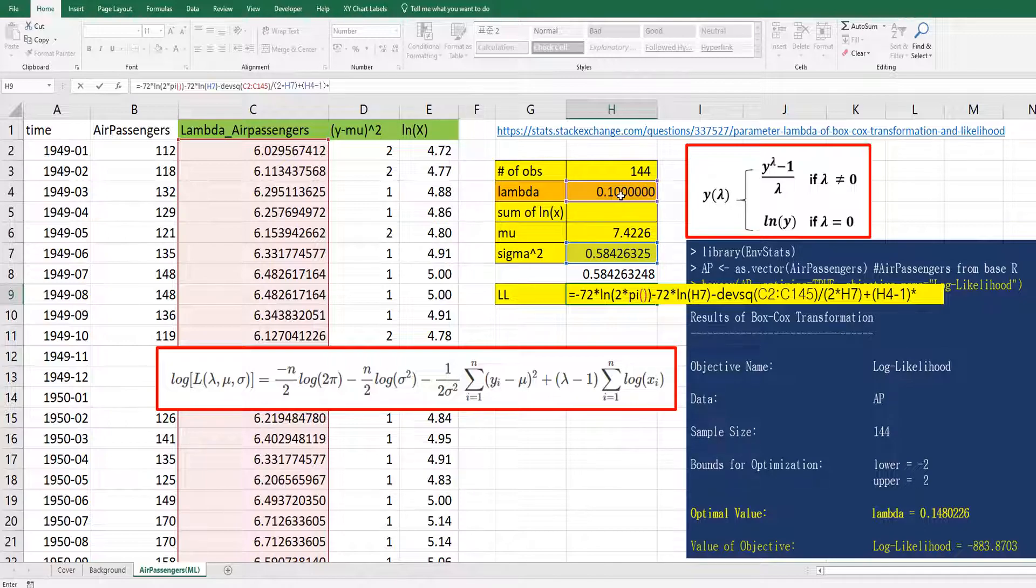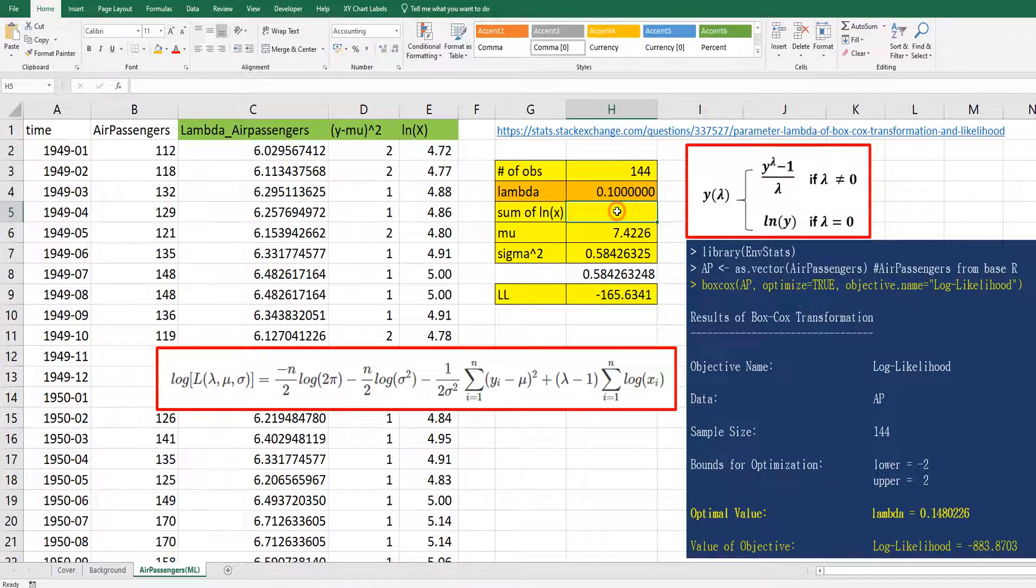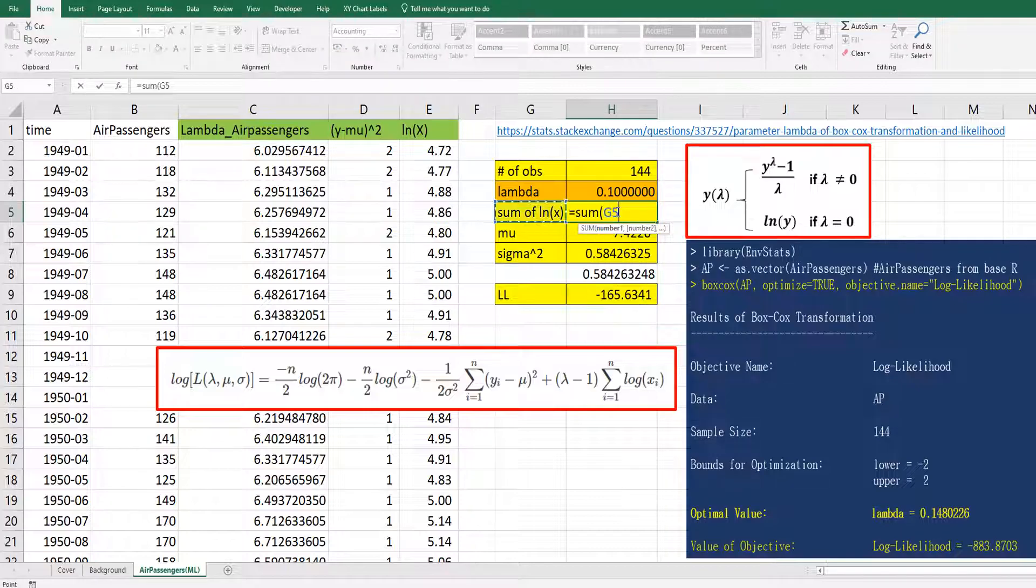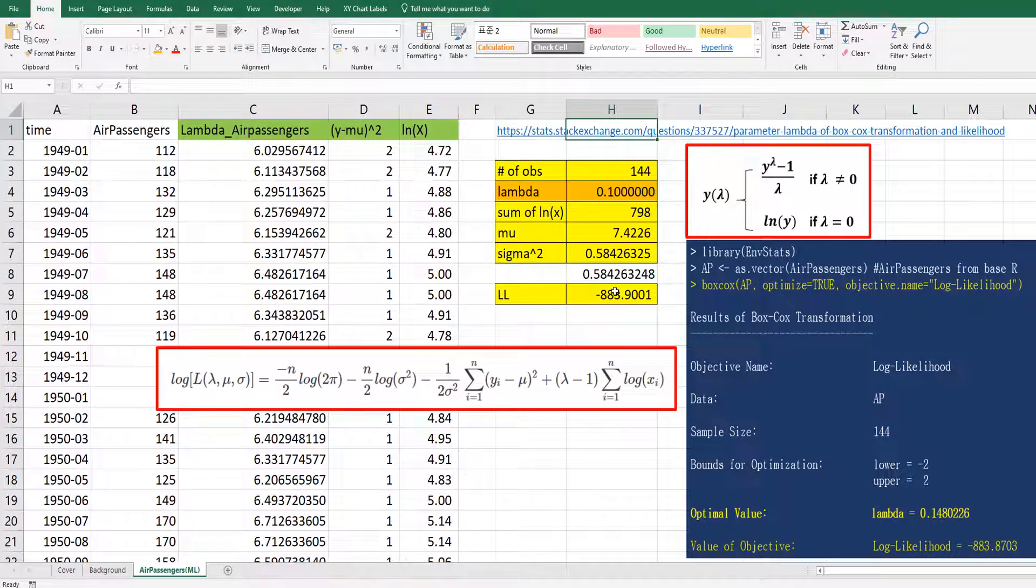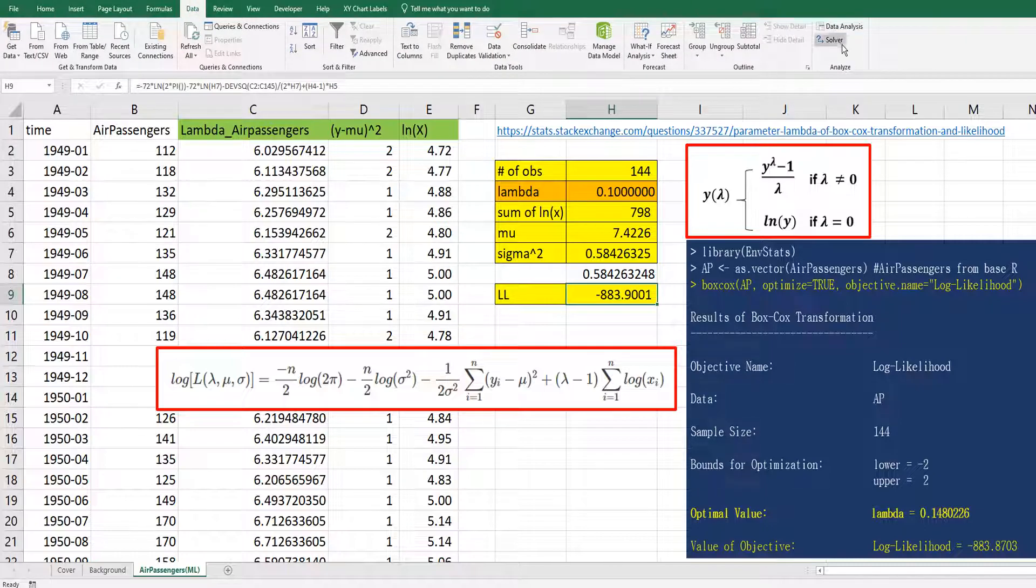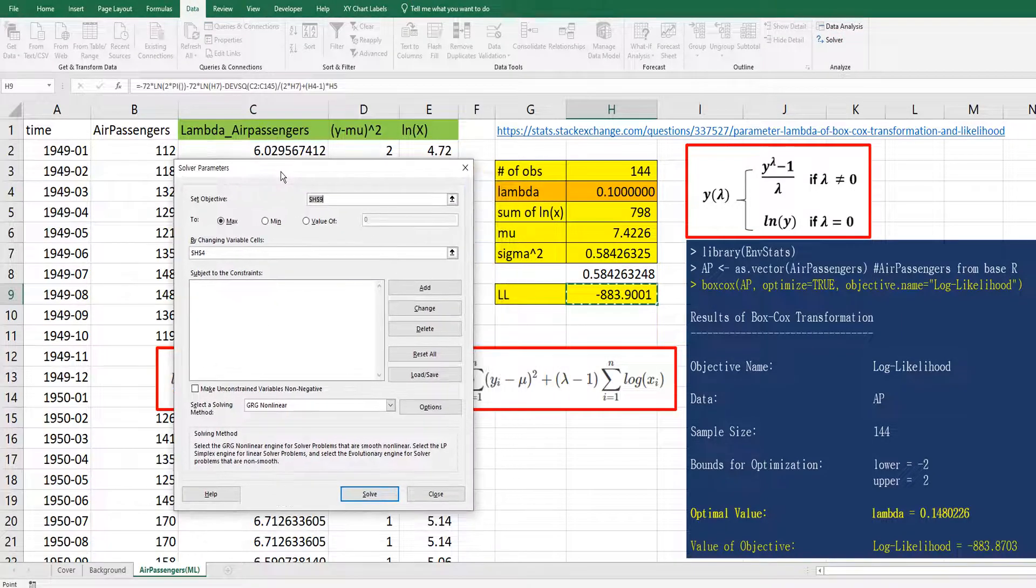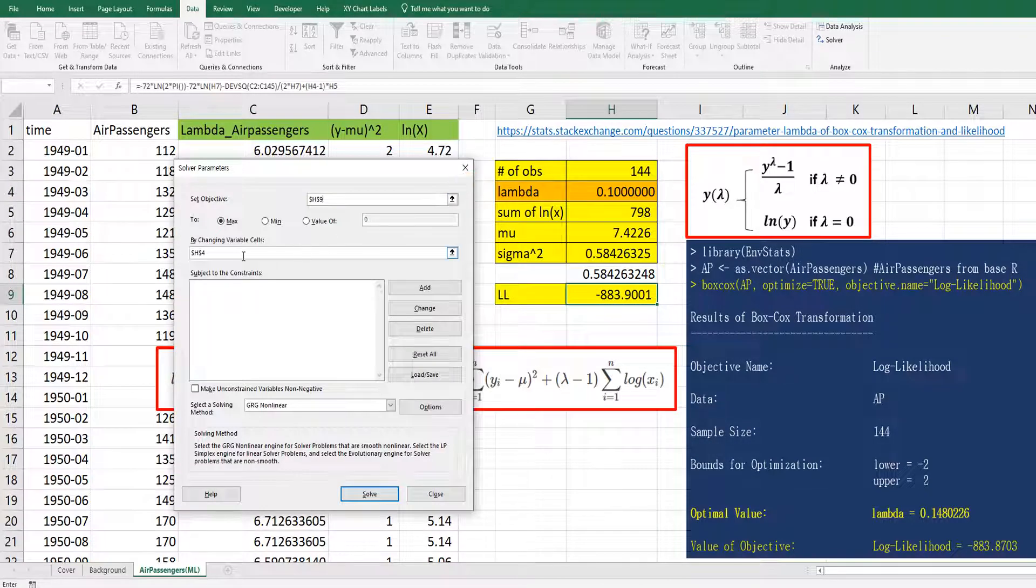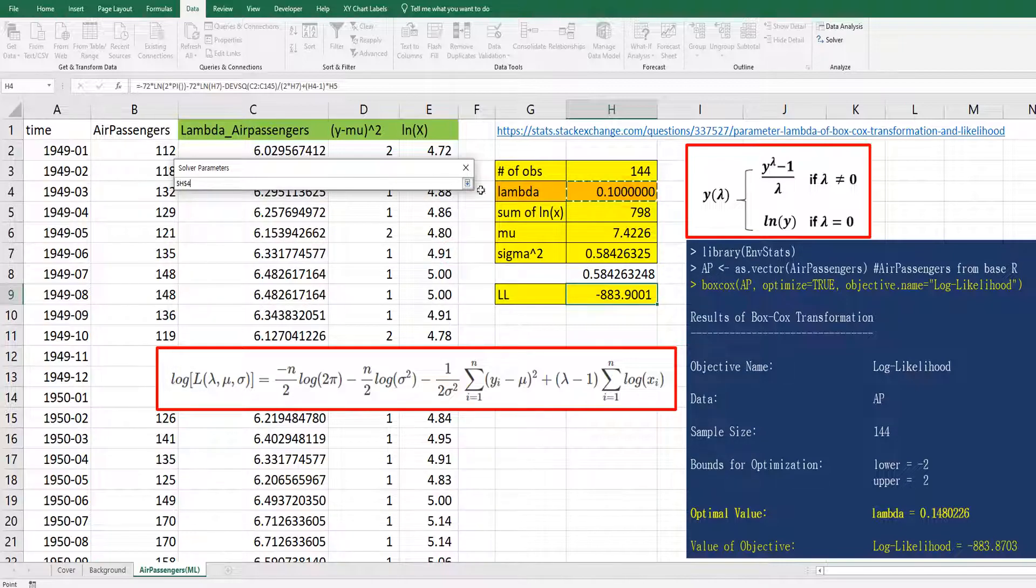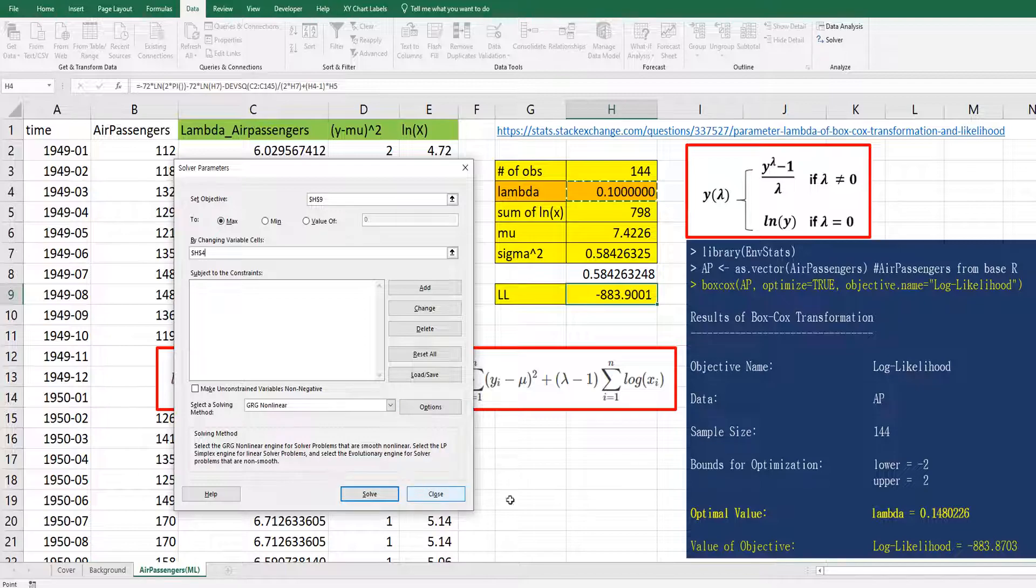So let's get sum of log x here. So we want to maximize this log likelihood by using solver. So go click data tab and click solver. And set objective from log likelihood and change value from lambda. Then let's click solve.